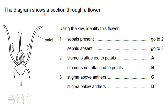The diagram shows a section through a flower — use the key to identify this flower. Identify the parts: sepal, petal, stamen, ovary, style, and stigma. First feature: are sepals present? Yes, sepals are present, so go to question two. Next: are stamens attached to petals or not attached? The petals are here and the stamens are attached, so the answer is A.